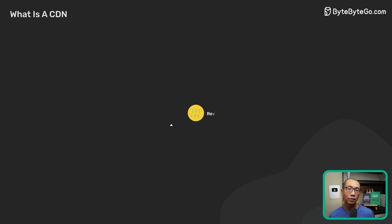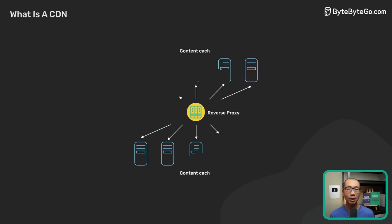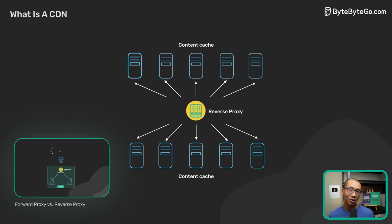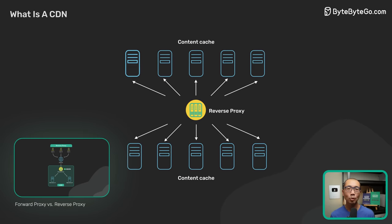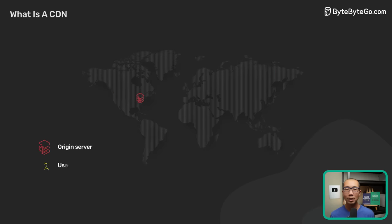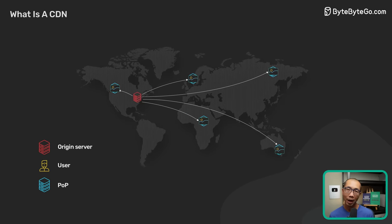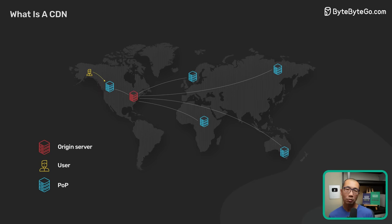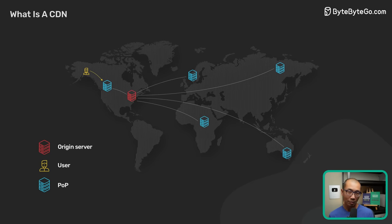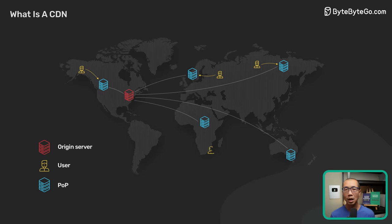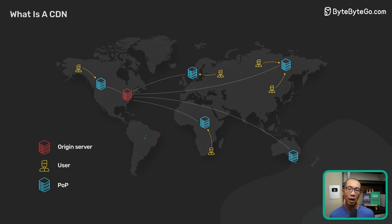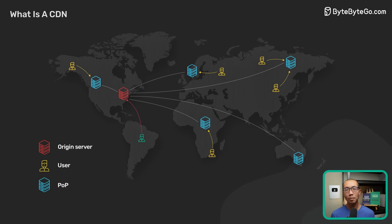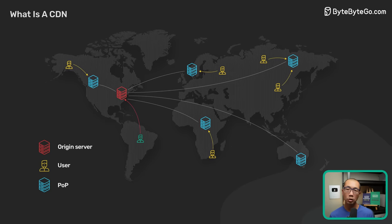Each edge server acts as a reverse proxy with a huge content cache. Static contents are cached at the edge server in the content cache. If a piece of content is in the cache, it can be quickly returned to the user. Since the edge server only asks for a copy of the static content from the origin server when it is not in the cache, this greatly reduces the load and bandwidth requirements of the origin server cluster.